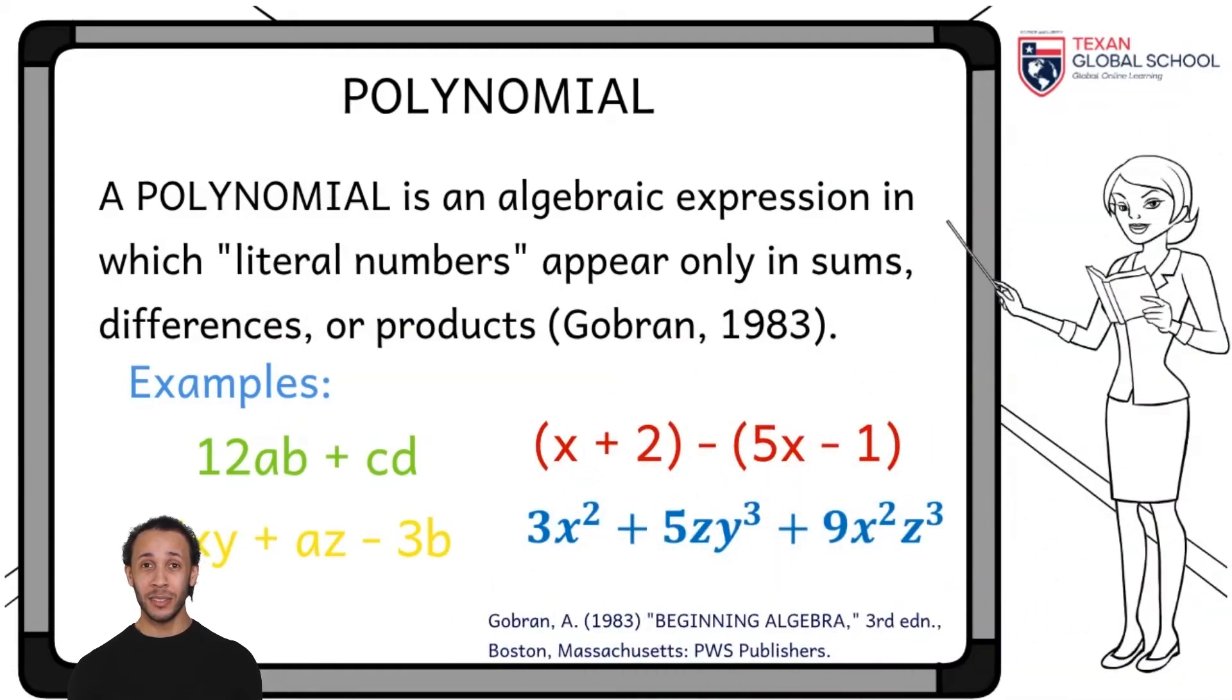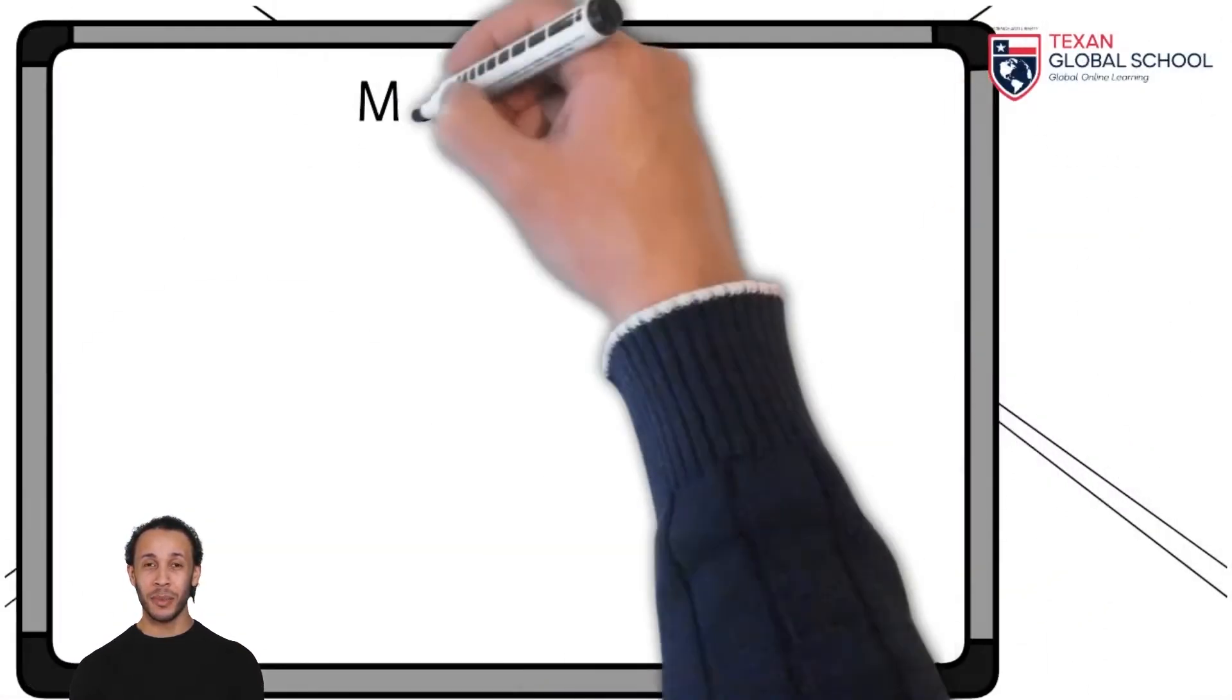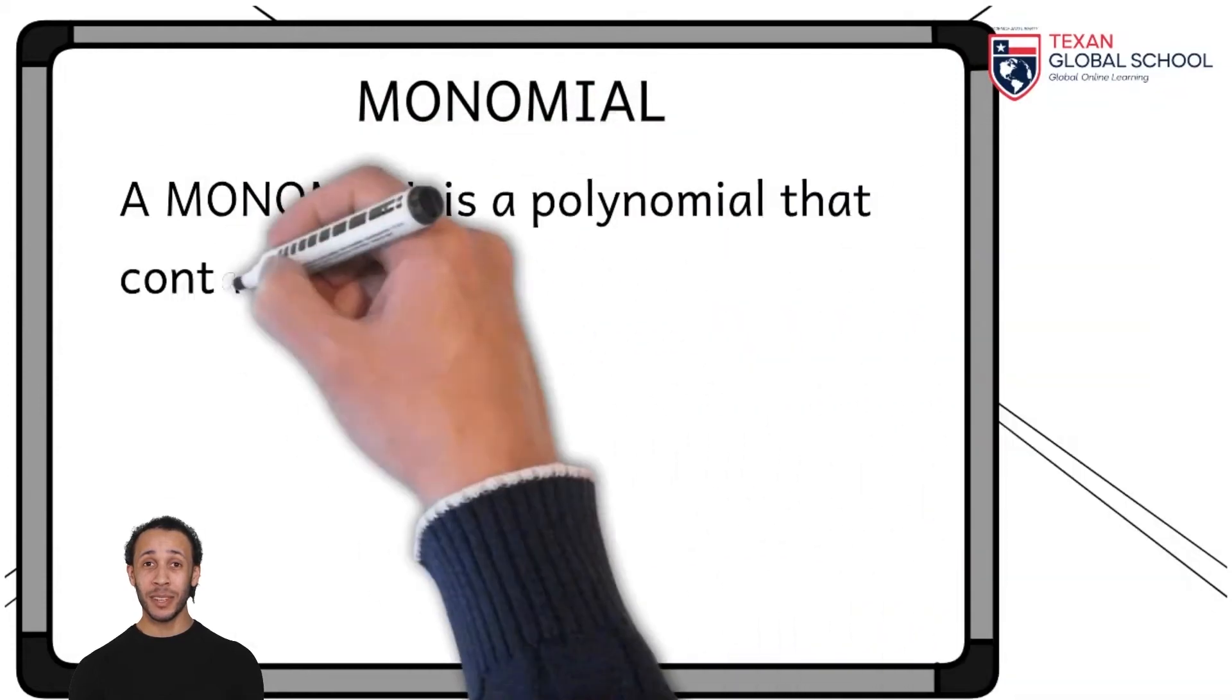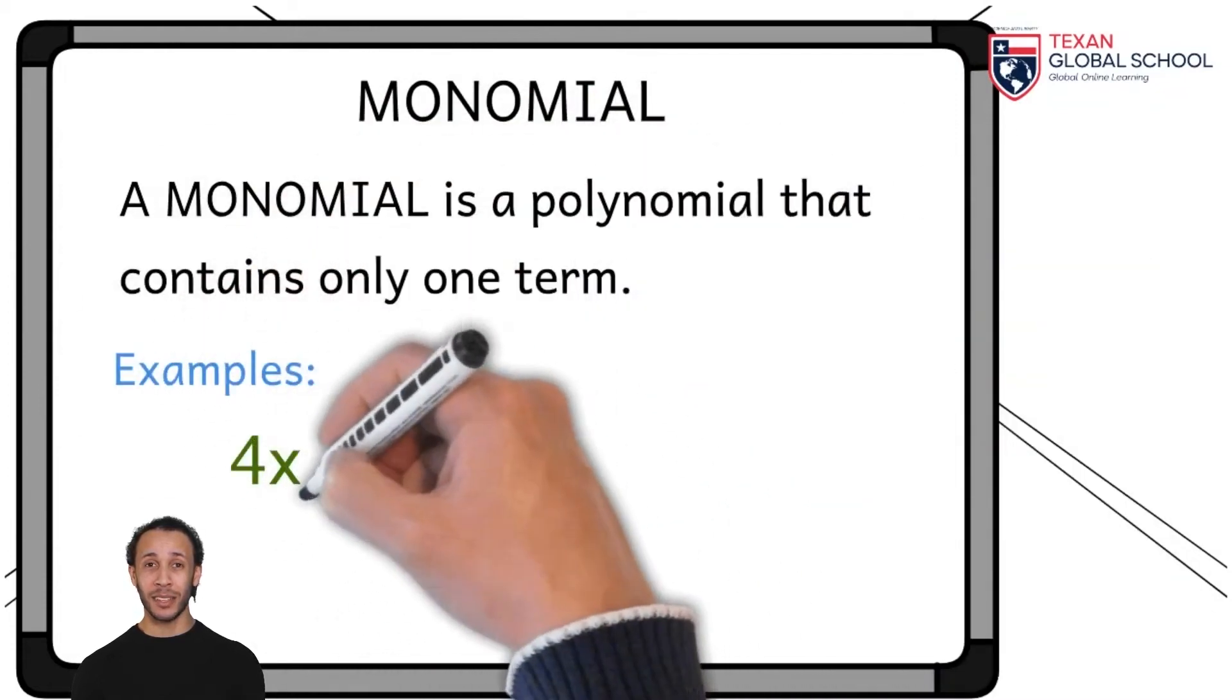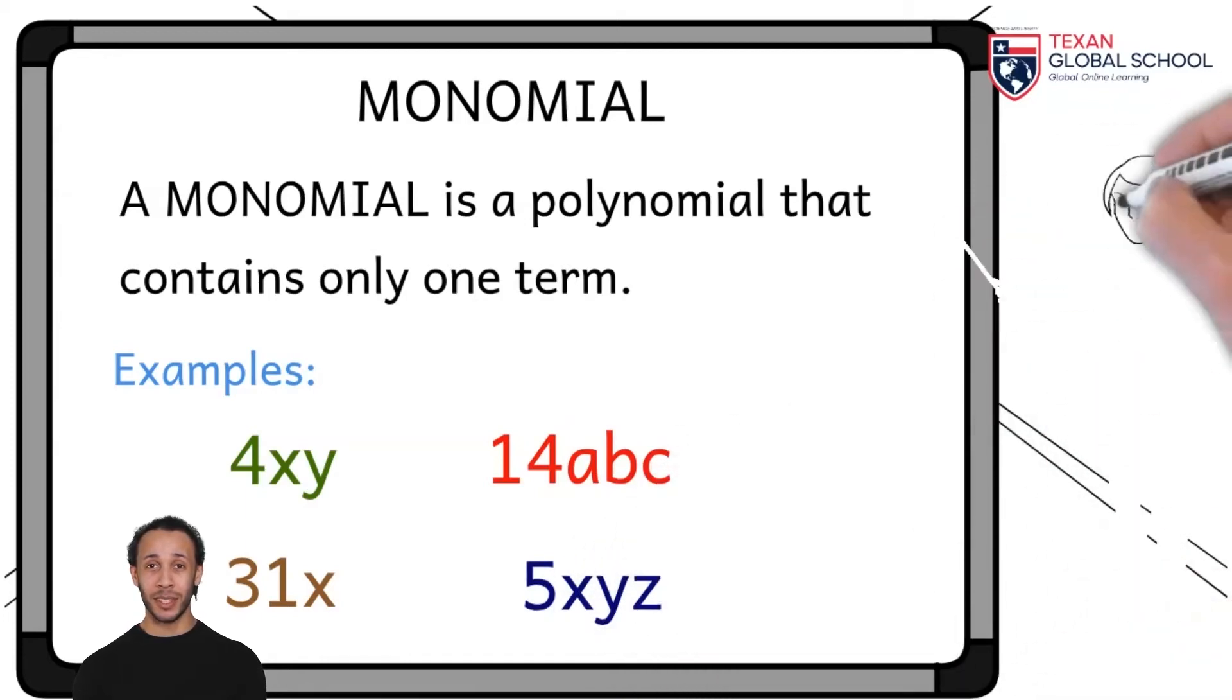Based on the same concepts, we define a monomial as a polynomial that contains only one term. In the examples, we can see that all literals appear in products only. Only one term appears on each example because there are no additions or subtractions.